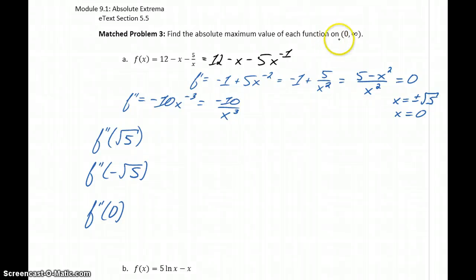Since we're only considering this function on the interval from 0 to infinity, not including 0, we can throw out x equals 0. That's not going to be an absolute maximum because we're not defining our function at 0. We can also throw out x equals negative square root of 5, because that's clearly outside our domain.